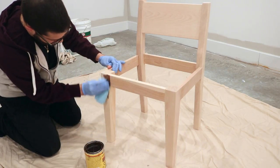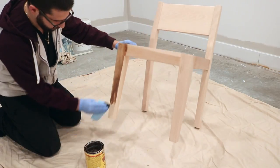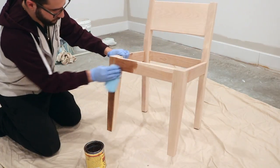Once the chair frames were assembled, I applied one coat of Minwax Special Walnut Stain. I applied it thick, then came back with a clean rag a few minutes later to wipe off the excess.